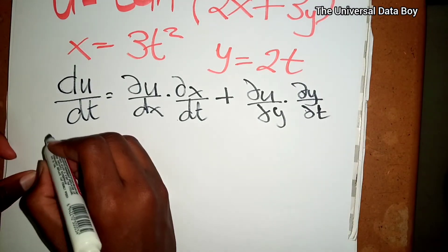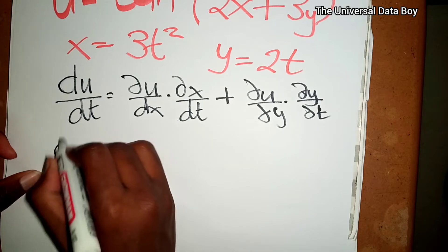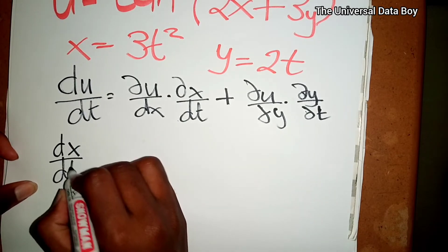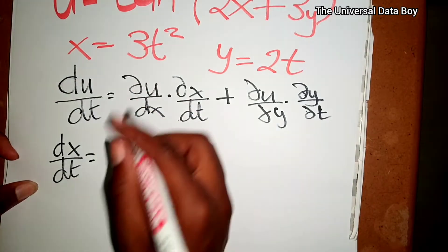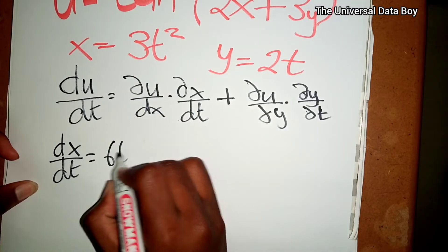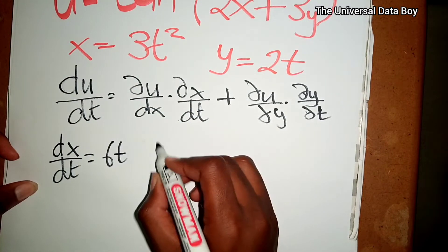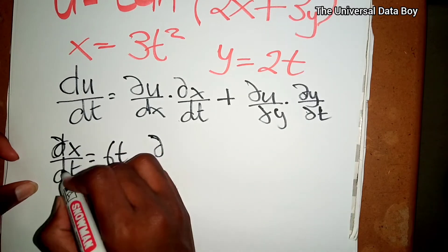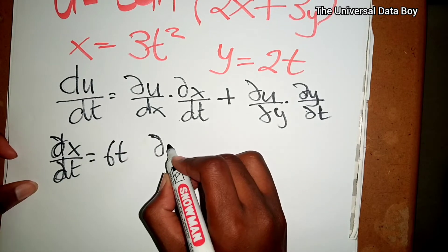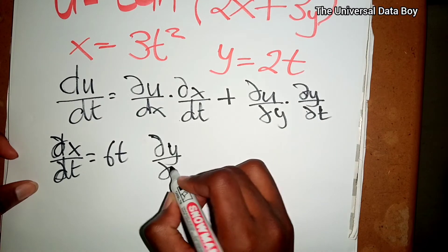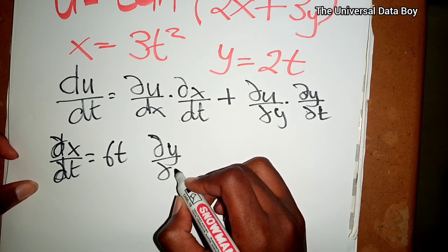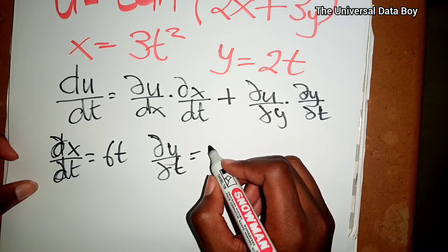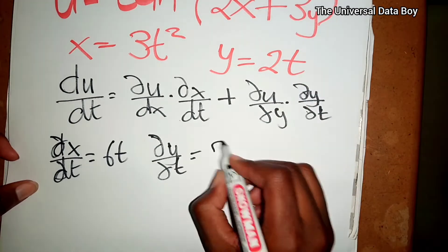We start by finding dx/dt. dx/dt is just 6t. Then dy/dt — these are partial derivatives — dy/dt will be given by 2.